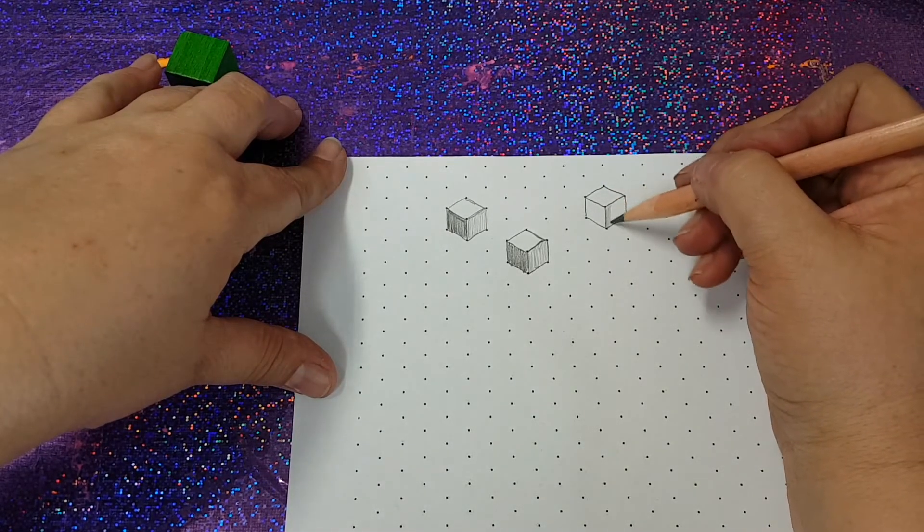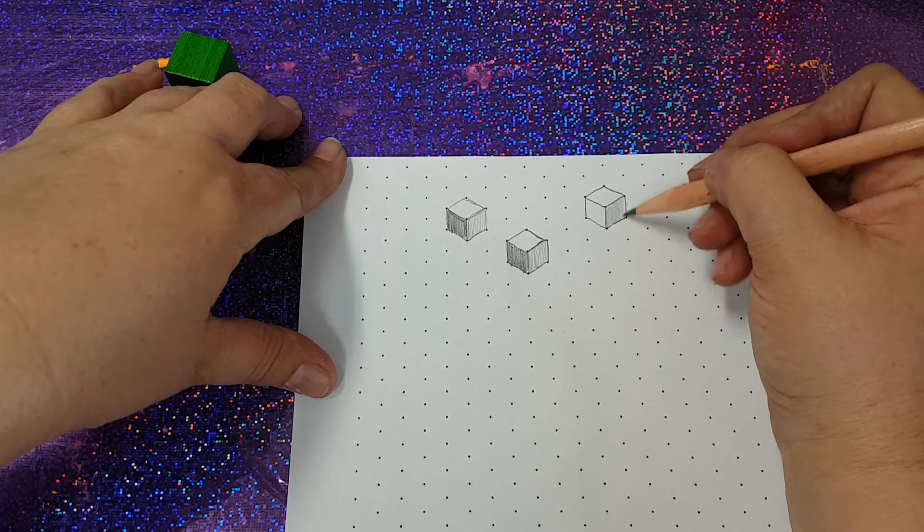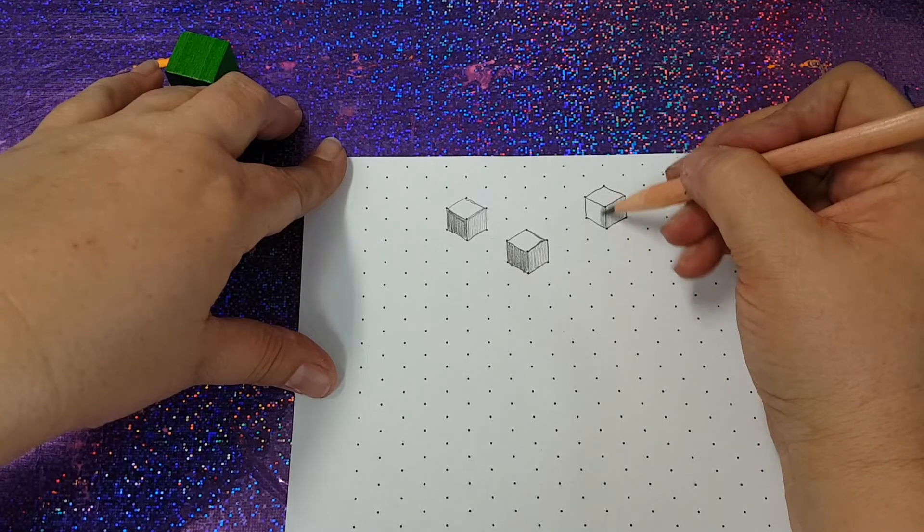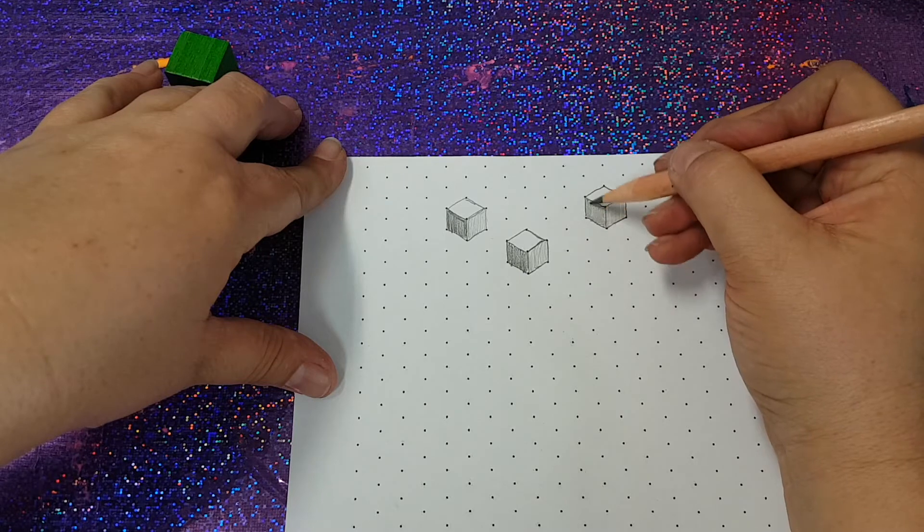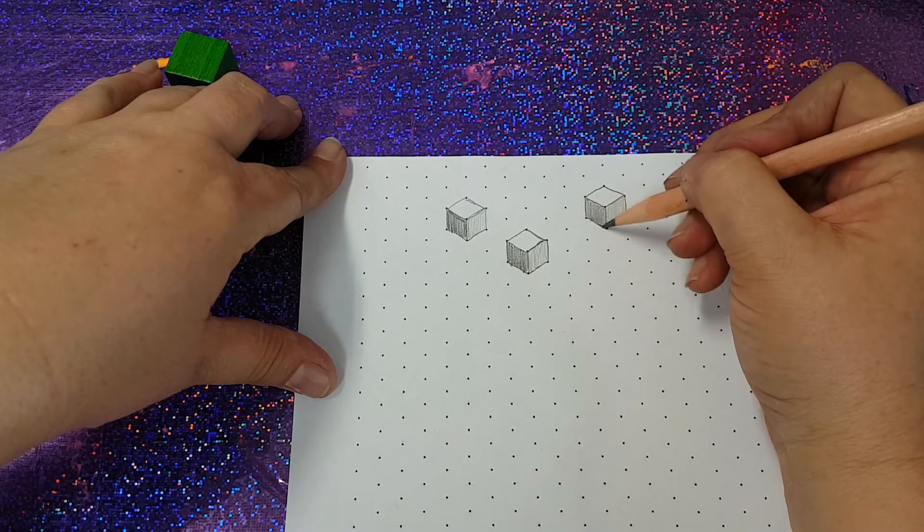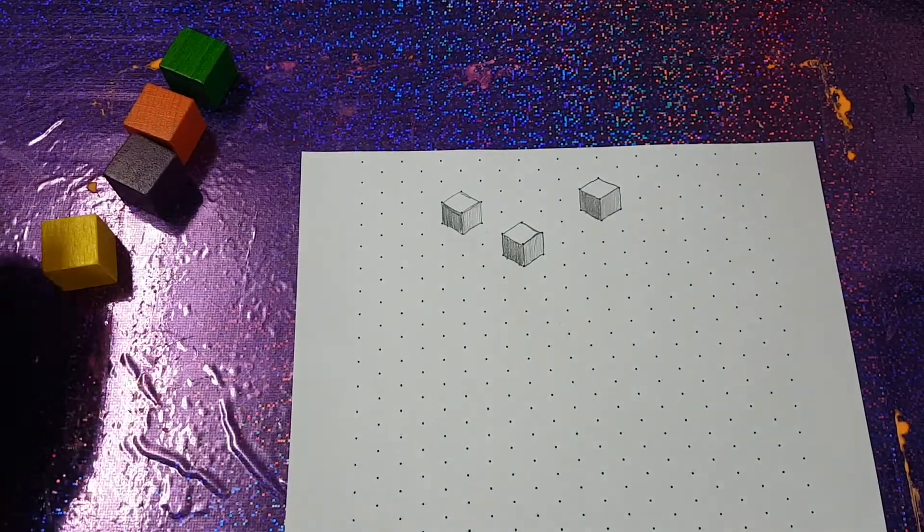Lightly shading. Try and make your shading nice and tidy. And then this one we're going to make a little bit darker. And you can build up your tone as you go. Okay so I've drawn three cubes. That's really cool.